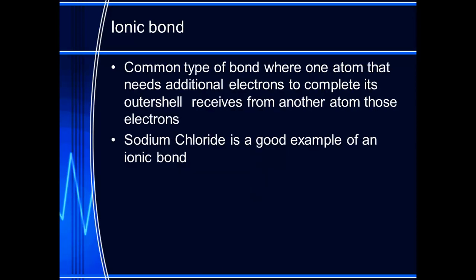An ion is an electrically charged atom or molecule which has available orbiting electrons. An ionic bond is a common type of bond where one atom that needs additional electrons to complete its outer shell receives from another atom those particular electrons. Your book describes this in a little bit bigger detail and you're welcome to read that.